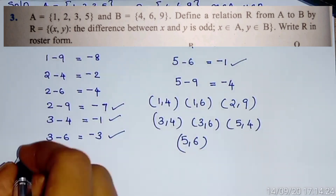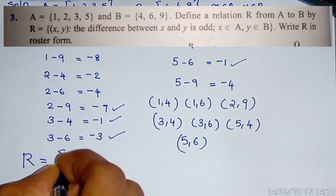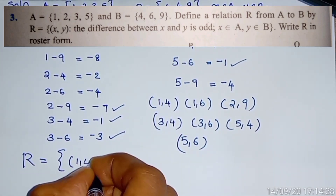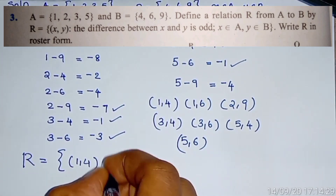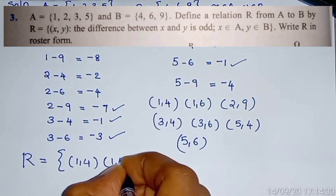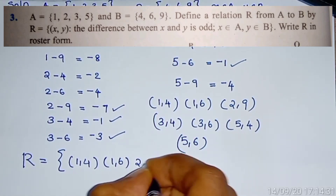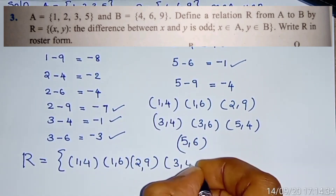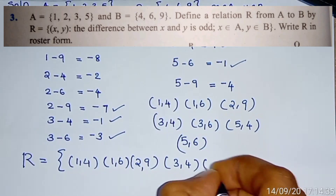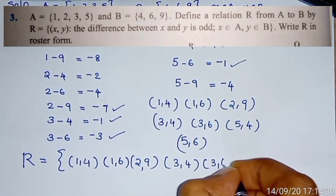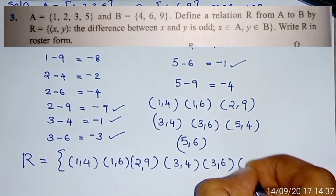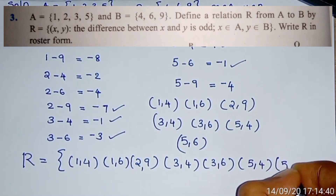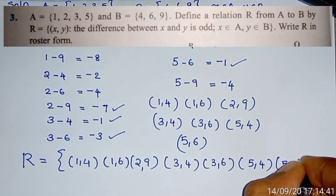So R equals the set of ordered pairs: {(1, 4), (1, 6), (2, 9), (3, 4), (3, 6), (5, 4), (5, 6)}.